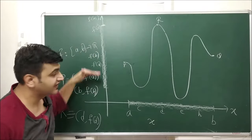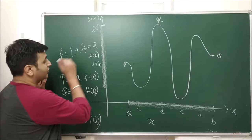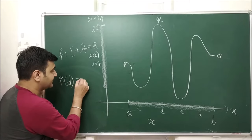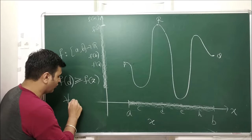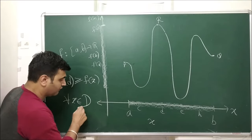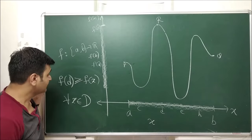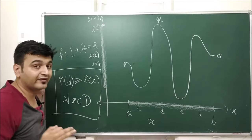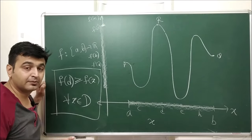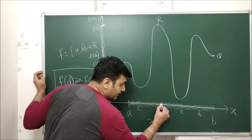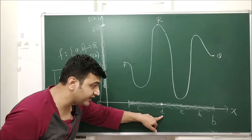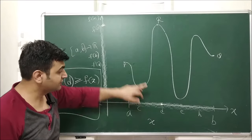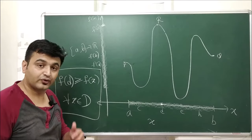So what I'm saying is: f(d) ≥ f(x) for all x in the closed interval [a, b]. When you have such a condition, then f(d) is called the maximum value of the function f, and the point at which this maximum value occurs is point d. So at point d, the function has the maximum value, and the maximum value is f(d).